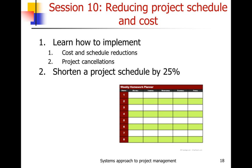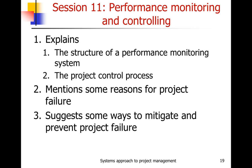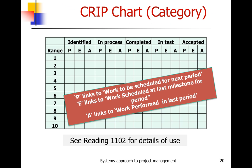Session 10 deals with reducing project schedule and costs. You learn how to implement cost and schedule reductions, what happens when a project is cancelled, and the exercise involves shortening a project by 25%. Session 11 covers performance monitoring and controlling: the structure of a performance monitoring system, the project control process, reasons for project failure and how to mitigate them. One of the tools introduced is the crypt chart, covered in session 11 with much more detail available in reading 11-02.